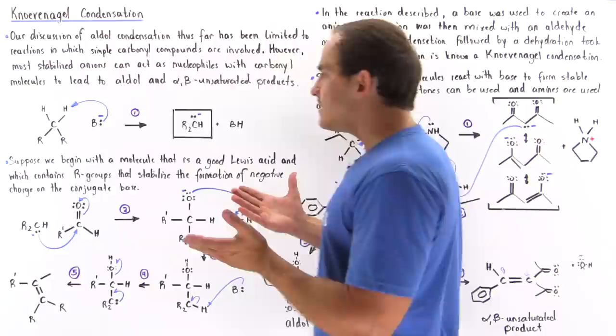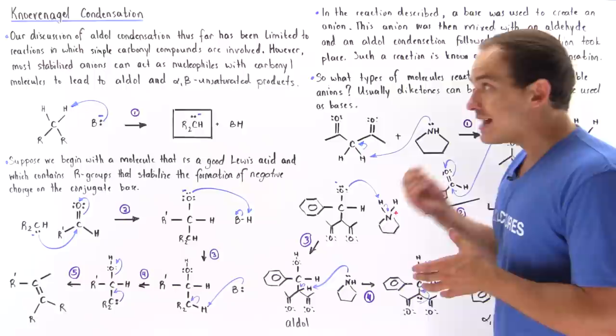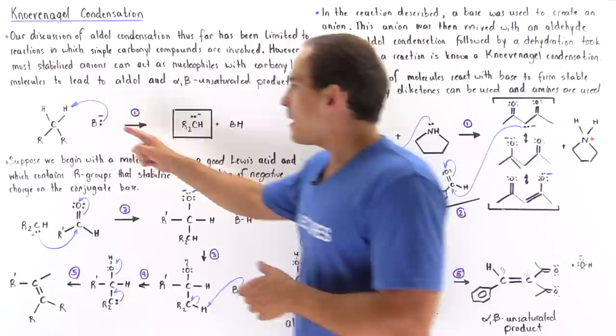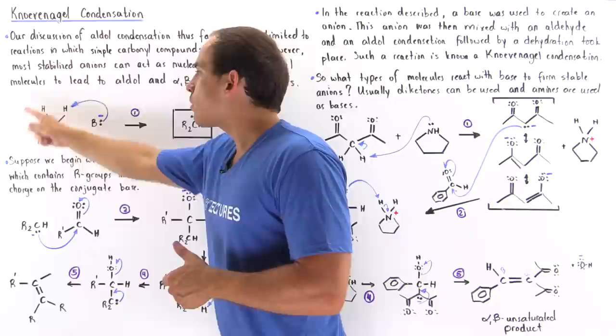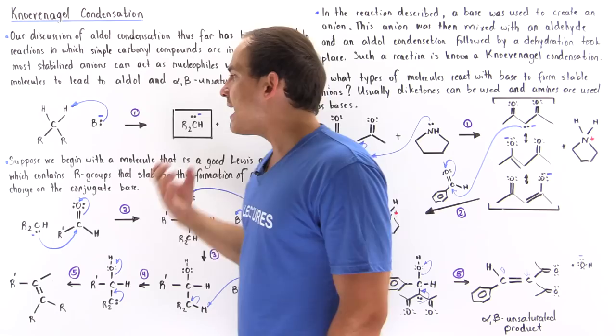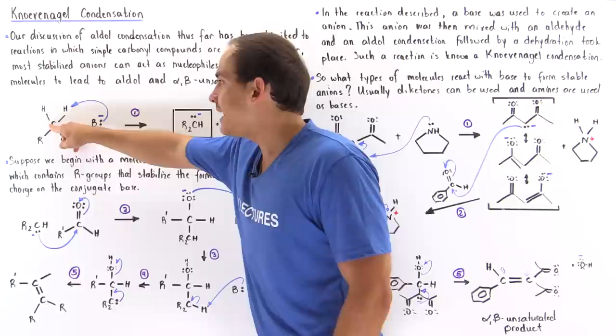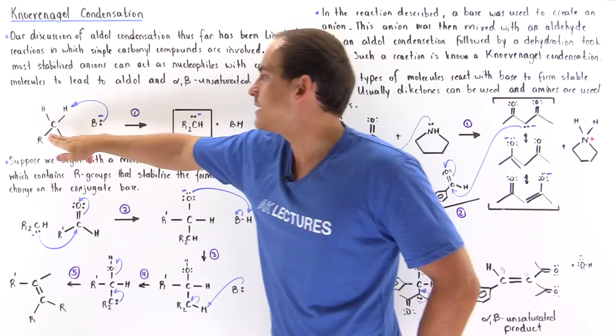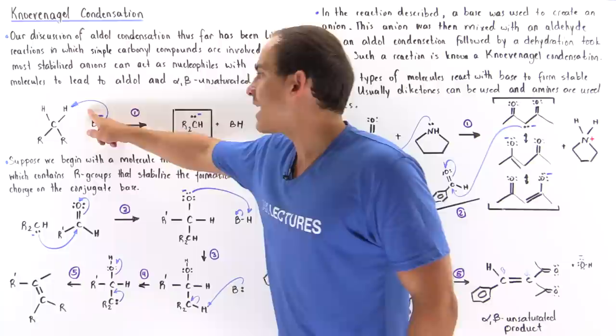Basically, in the first step of the covenangle condensation, we have to form our nucleophile — our anion that will act as the nucleophile with our carbonyl compound. This is our more complicated version of our carbonyl compound in which this carbon is our alpha carbon. We have two H atoms attached to our alpha carbon, and these R groups are basically some sort of carbonyl R groups that act to stabilize the negative charge that is formed on this carbon of the conjugate base. So in step one, we have the relatively strong Lewis acid that reacts with some type of base, which I've designated generally with the letter B.